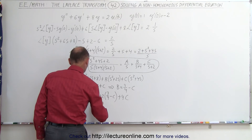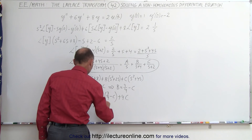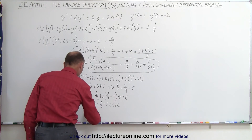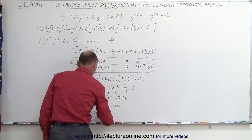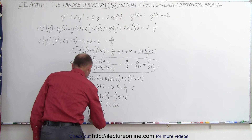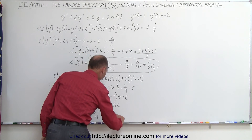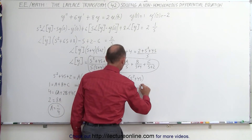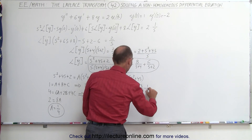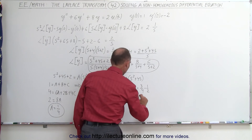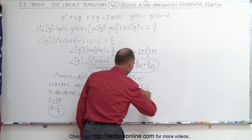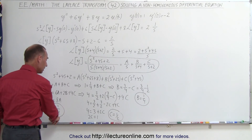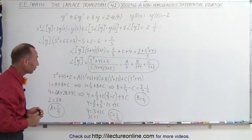Expanding: four equals three halves plus three halves minus two C plus four C, which simplifies to four equals three plus two C. Therefore two C equals one, so C equals one half. Then B equals three quarters minus one half, which is three quarters minus two quarters, so B equals one quarter. Checking with the first equation: A plus B plus C equals one quarter plus one quarter plus one half equals one. Correct!